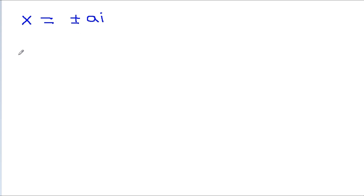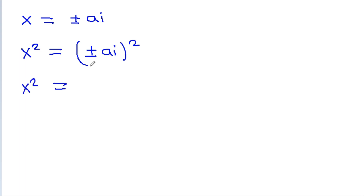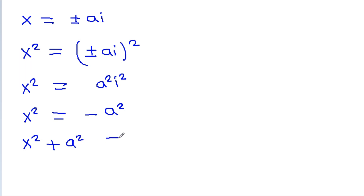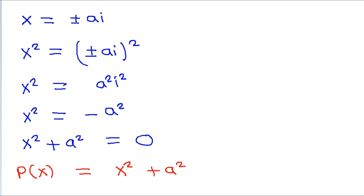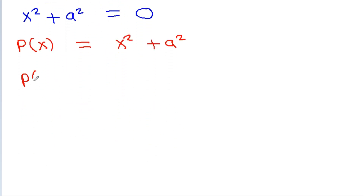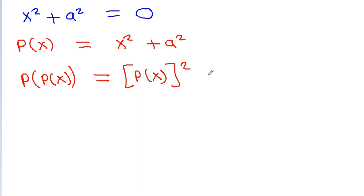If we square both sides, we get x² = (±ai)², which gives x² = −a² (since i² = −1). Therefore x² + a² = 0, and so we can write p(x) = x² + a².